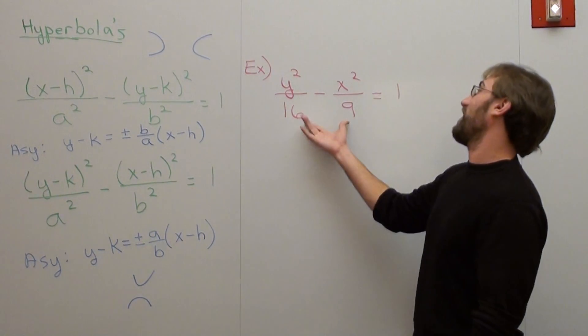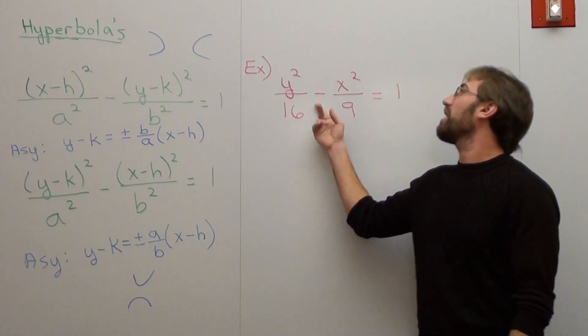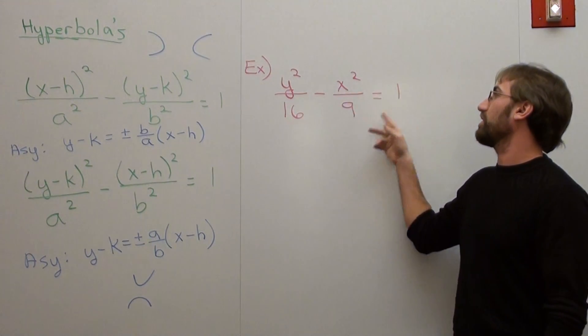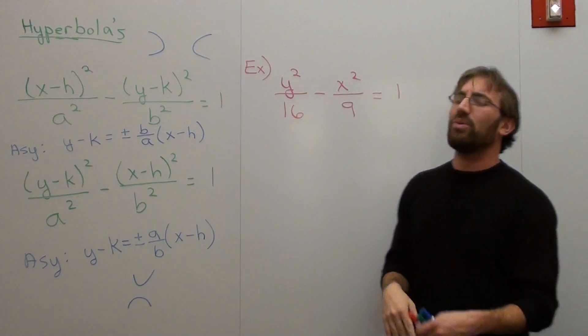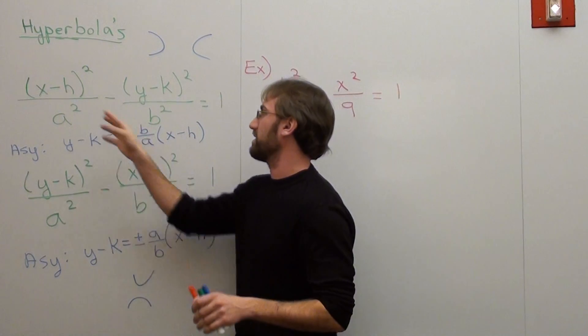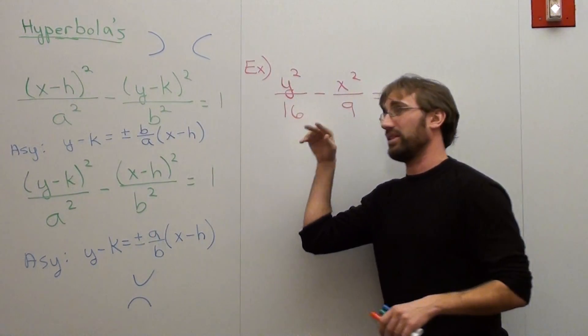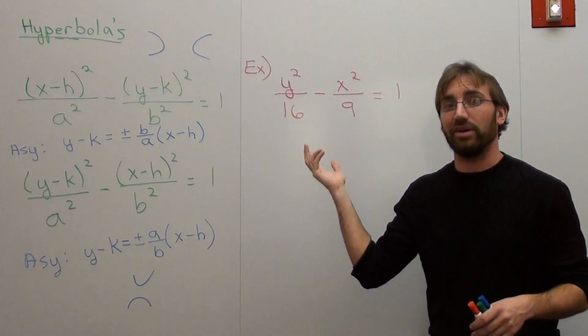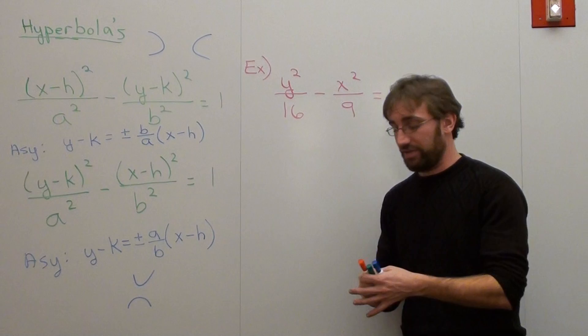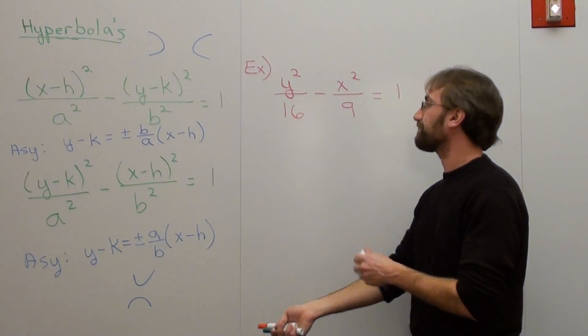So we're going to try this problem: y squared over 16 minus x squared over 9 equals 1. We're not going to worry about shifting the center — it doesn't have an h or k value other than 0 and 0, so it's going to be a pretty straightforward graph.